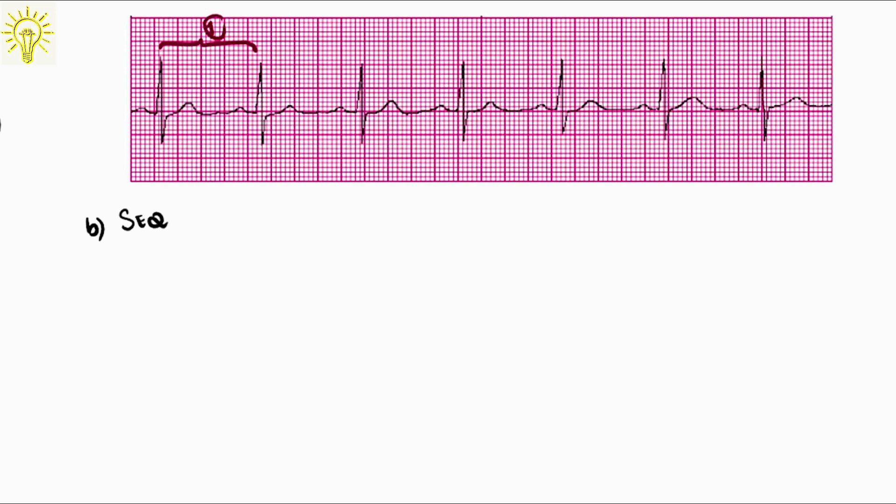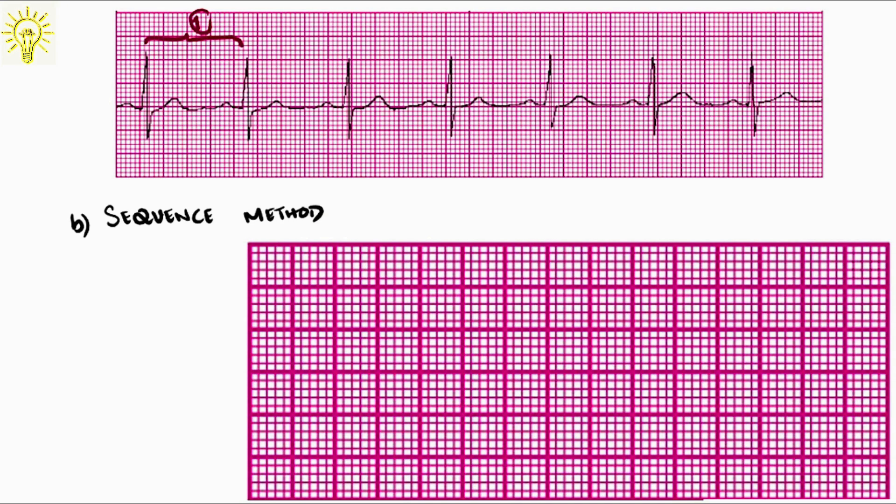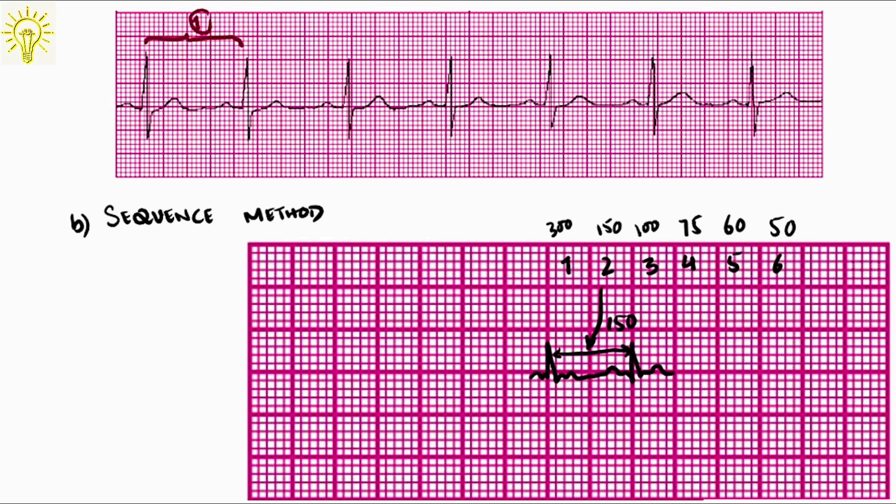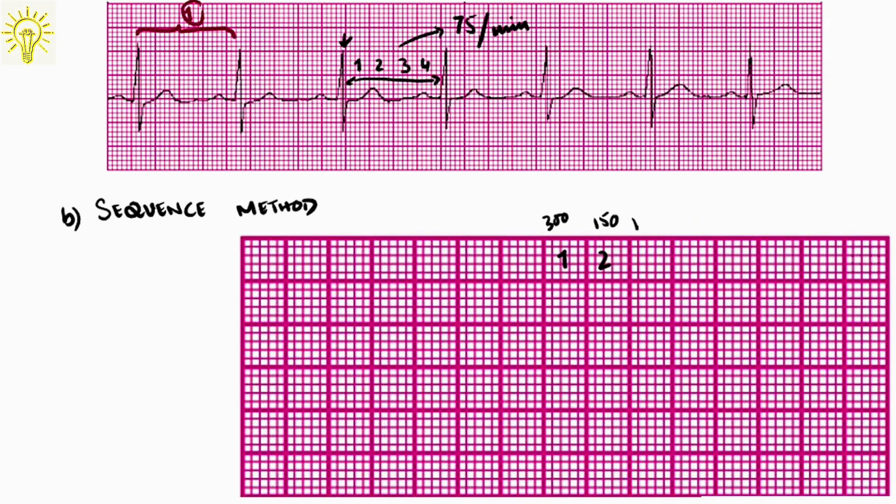Next method is the sequence method, and I love it because it's easier for me. In this method, we calculate number of large boxes between R waves. 1 box means 300 beats per minute, 2 boxes 150, 5 boxes would mean 60 beats per minute. In the black wave below, there is 1 box between 2 successive R waves, meaning heart rate's around 300 beats per minute. In next wave, there are 2 boxes between R waves, meaning 150 beats per minute. So, in the above strip, there are 4 large boxes between successive R waves. Hence, rate is around 75 beats per minute. You have to remember the sequence, and that's all.